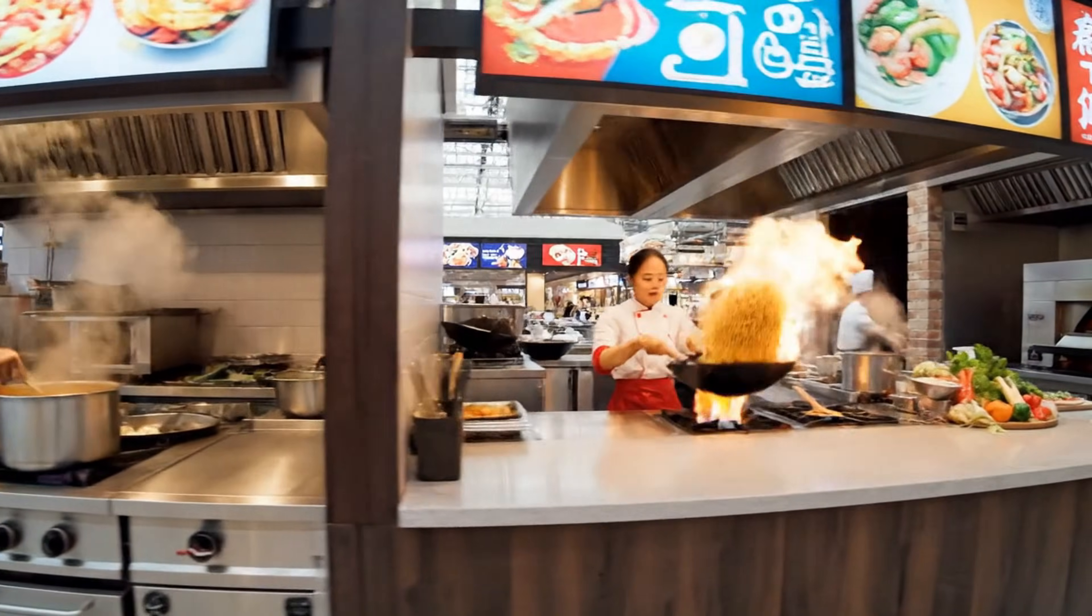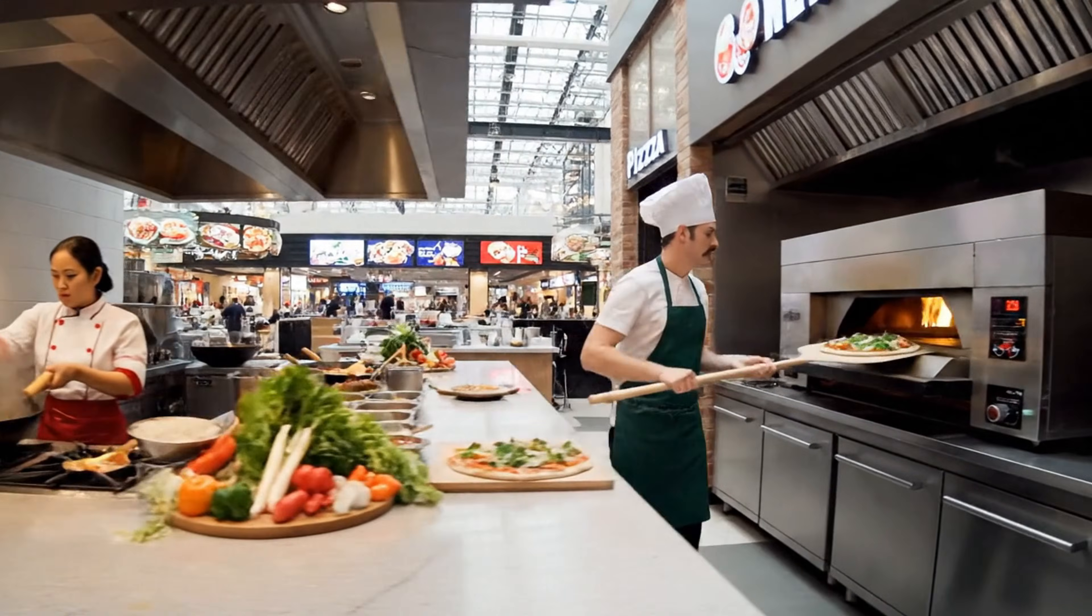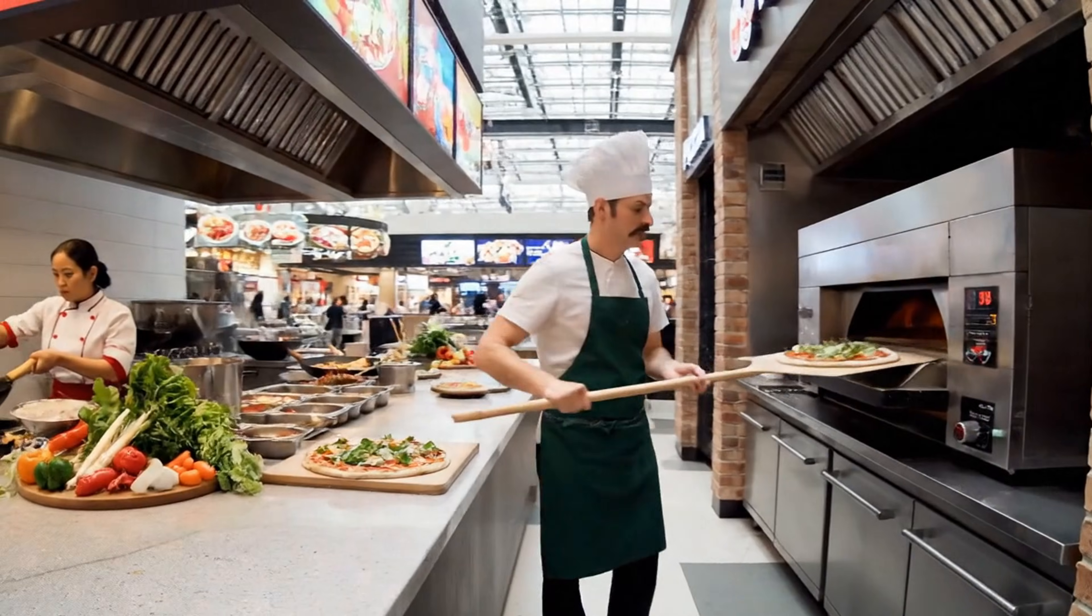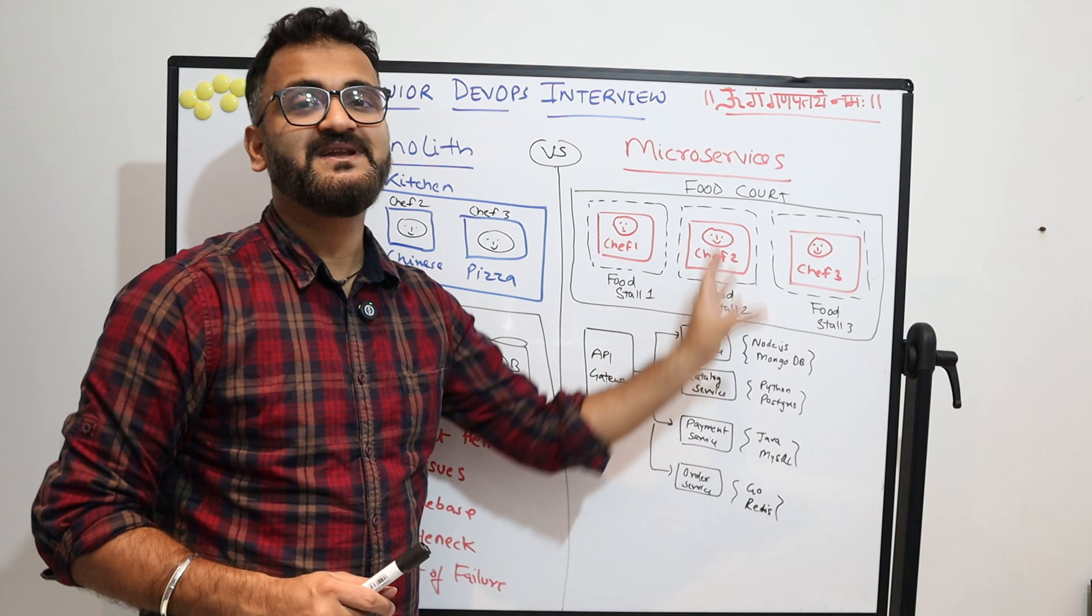Chef one has food stall one where he or she must be having their own kitchen where they can cook Indian. Food stall two can cook Chinese and food stall three can do fast food like pizza. And while all of these come under food court, they can individually work.